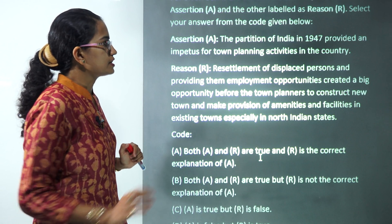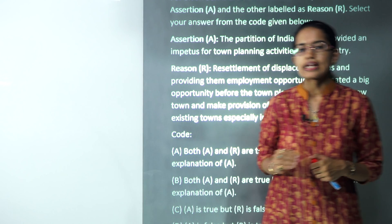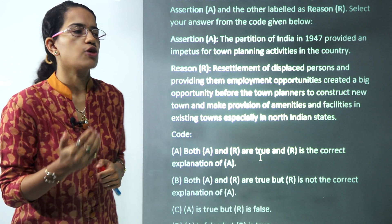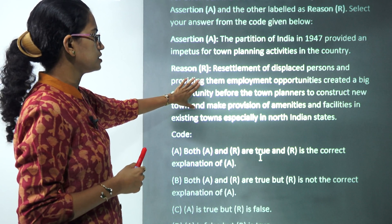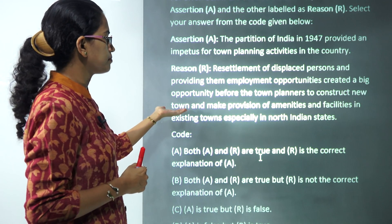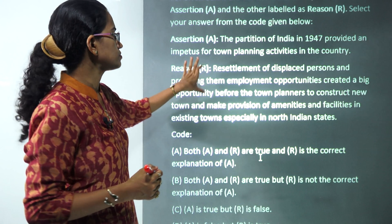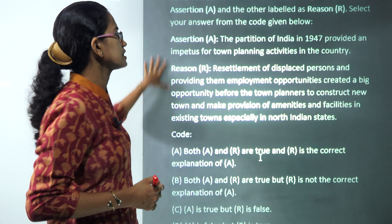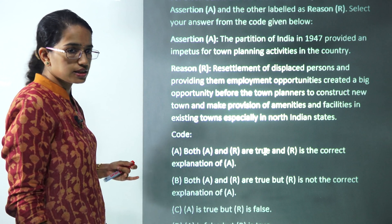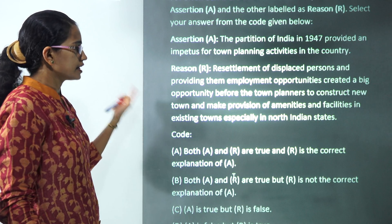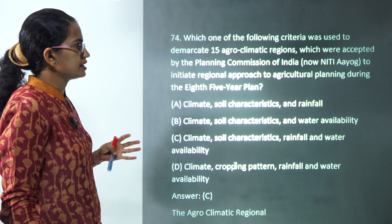The next is an assertion-reason question. The assertion is that the partition of India provided an impetus for town planning activities, modeled on Britain and America — totally correct. The reason is that resettlement of displaced persons and providing employment opportunity created a bigger opportunity for town planners — also correct. The reason correctly explains the assertion. This is a very important question directly from Brunn.